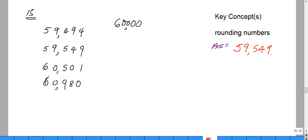Number 15 asks which of the following numbers, when rounded off to the nearest thousand, is 60,000. The key concept here is the rounding of numbers, so we need to understand that.